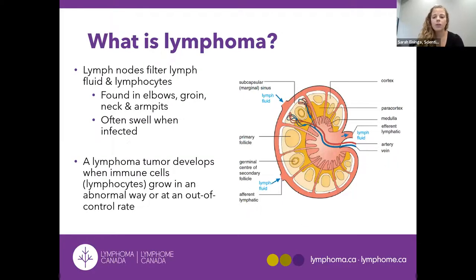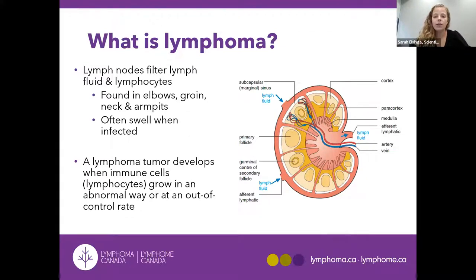Lymph nodes are really small, bean-shaped organs found throughout your body. They filter fluid, which contains lymphocytes — the immune cells of the lymphatic system — and they circulate all throughout your body. In this filtering system, they remove bacteria, viruses, and other foreign substances. There are hundreds of these nodes in your body, located in your elbow, your groin, your neck, and armpits. Whenever you have an infection, these lymph nodes can swell, which means your body is helping you fight the virus.